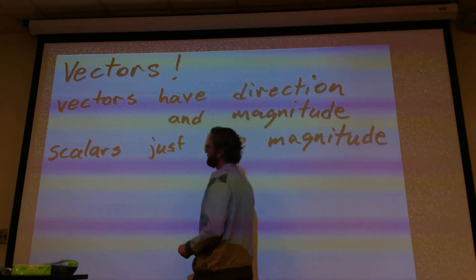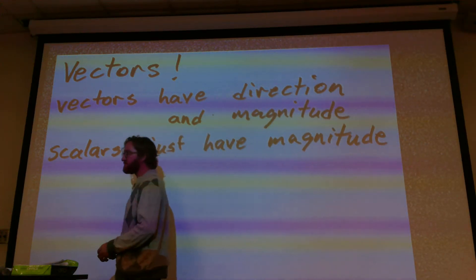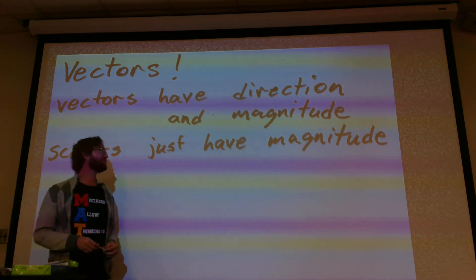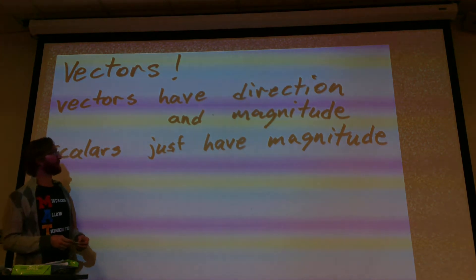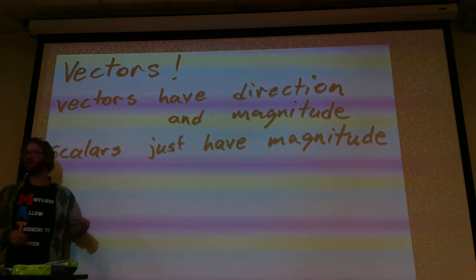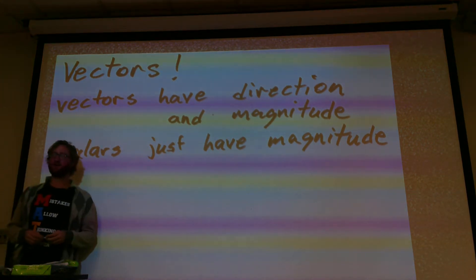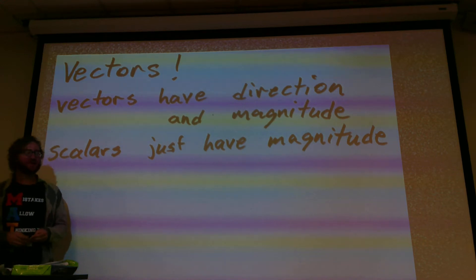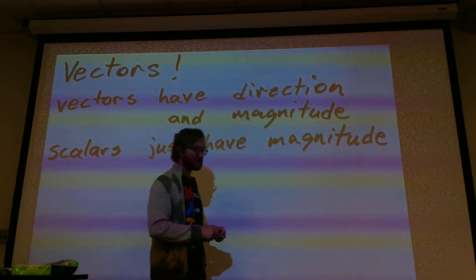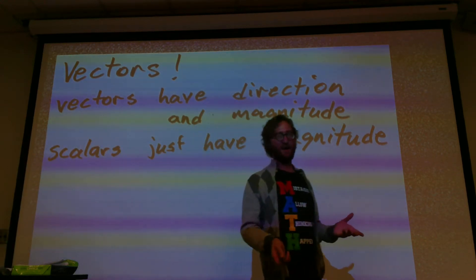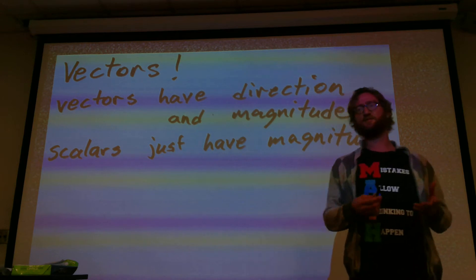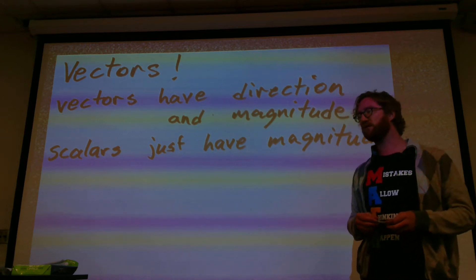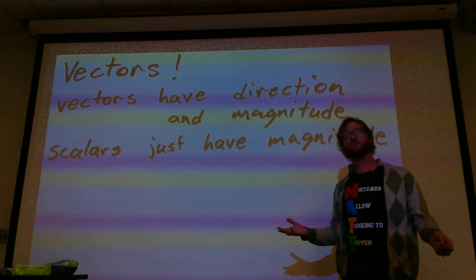The difference between vectors and scalars is that vectors have direction and magnitude, and scalars are just a simple quantity. So when you do the dot product, you take two vectors and do the dot product on them, and it produces a scalar.